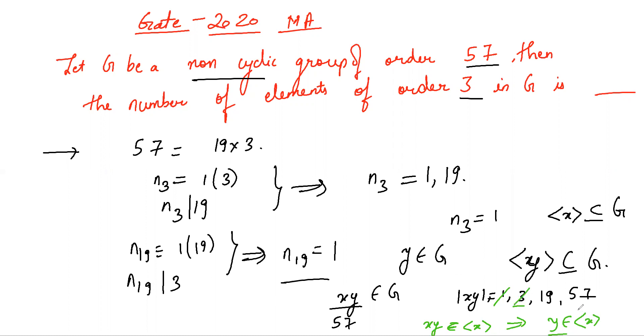Similarly, xy does not have order 19 because in that case xy will be an element of the group generated by y, which would imply xy is some y power k, which would imply x belongs to the group generated by y because x would be y power k minus 1.